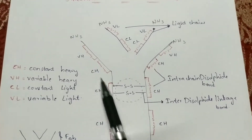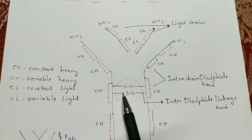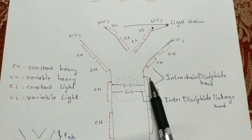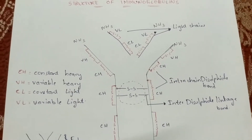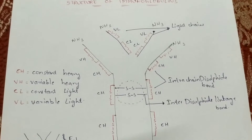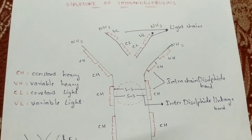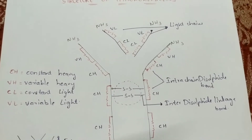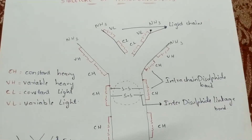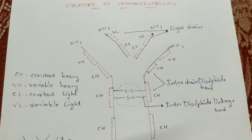These immunoglobulins are Y-shaped, and because of this Y-shape they are referred to as gamma globulins. Normally there are five types of immunoglobulins: IgG, IgA, IgM, IgD, and IgE. I will explain the properties of these types of immunoglobulins later.